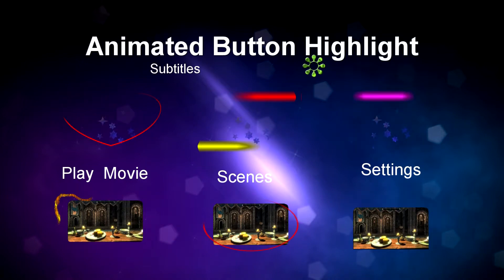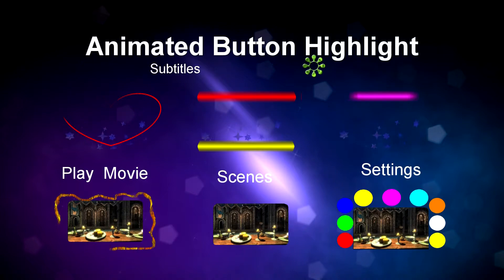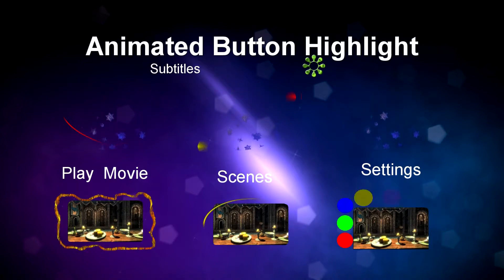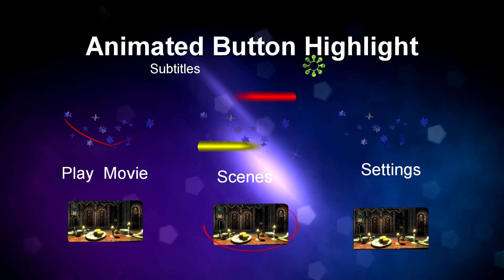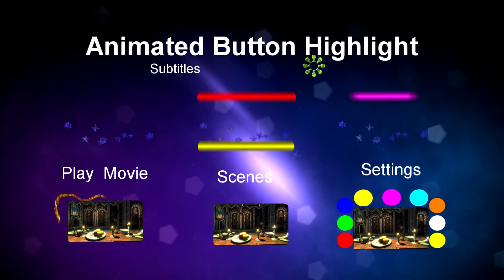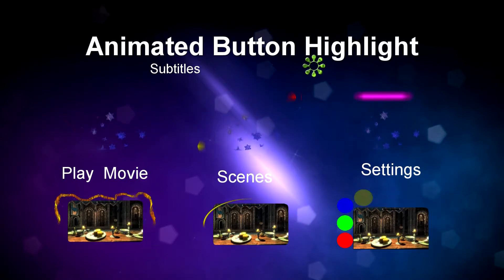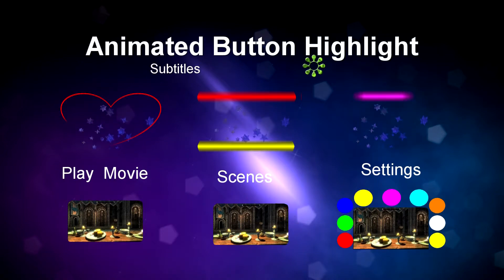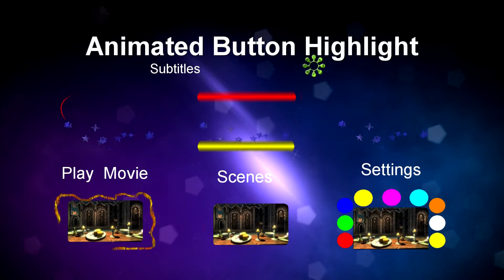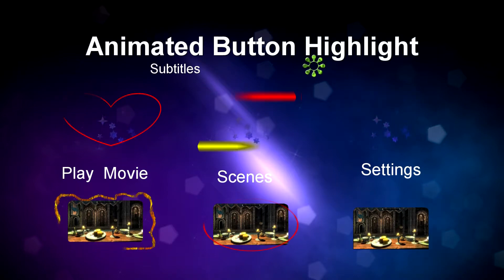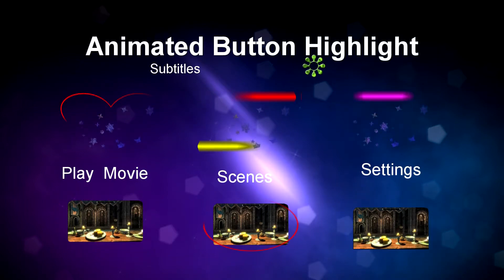Notice the Subtitles text from the Subtitles button is not so clear. The Play Movie, Scenes, Settings, Text, Animated Button, Highlight Text, and Separate Text labels are all pretty clean. I typically stay with standard standalone text instead of using text from the button.